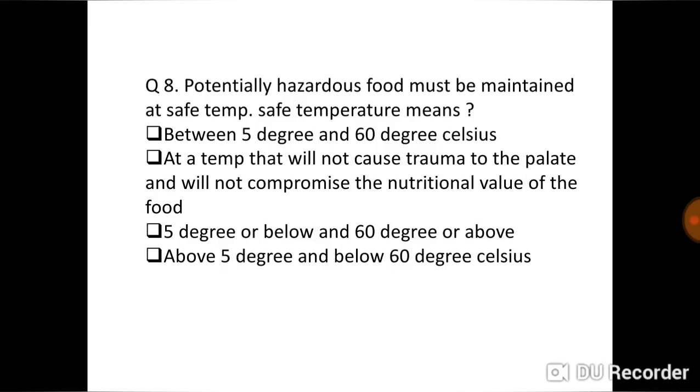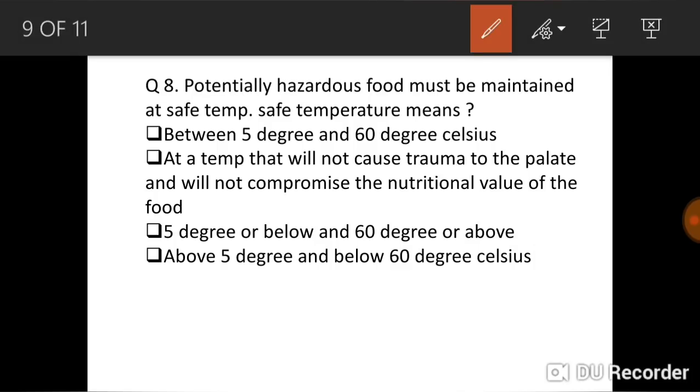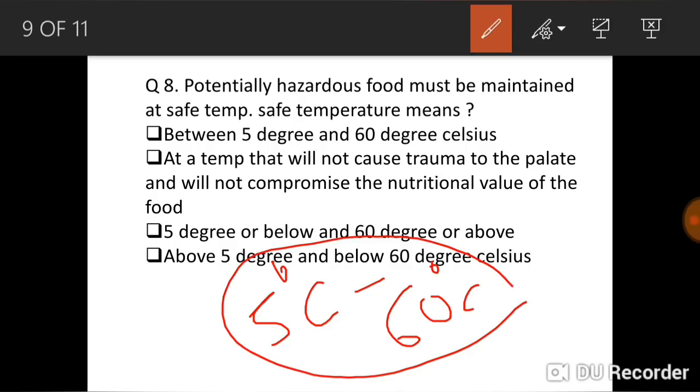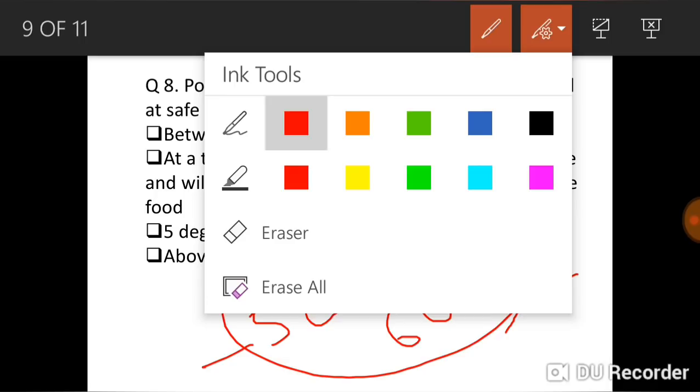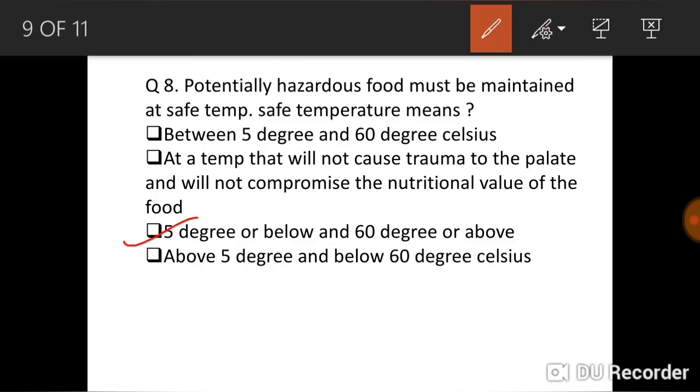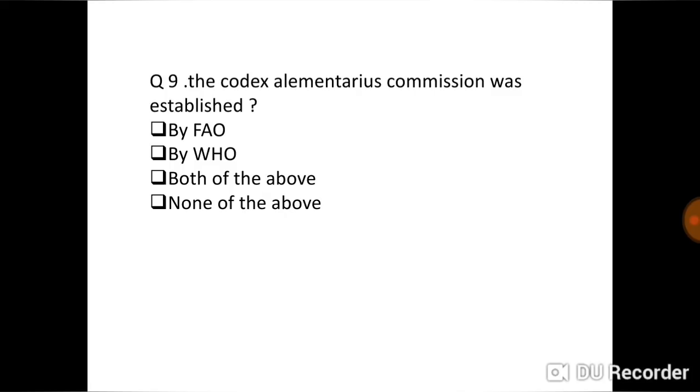Potentially hazardous food must be maintained at safe temperature. Safe temperature means we know that temperature danger zone is between 5 degrees Celsius to 60 degrees Celsius. So that is the temperature danger zone. So the safe temperature here it is asking for safe temperature. The safe temperature is below 5 degrees and above 60 degrees Celsius. So the correct answer is C, below 5 degrees and above 60 degrees Celsius is the safe temperature, not in between 5 degrees and 60 degrees Celsius because it is a temperature danger zone.